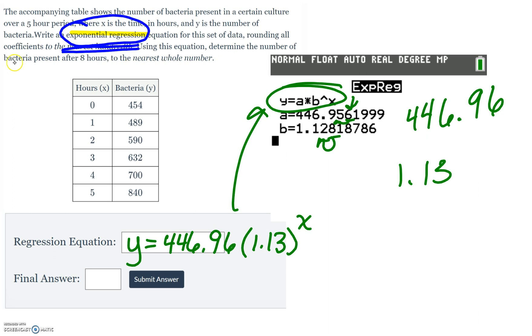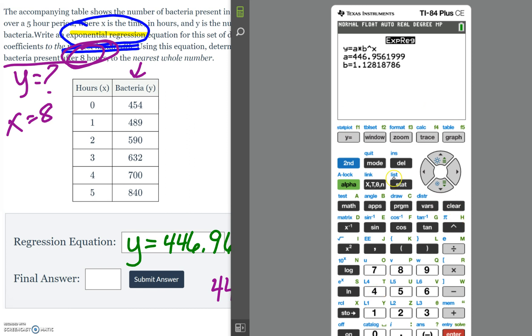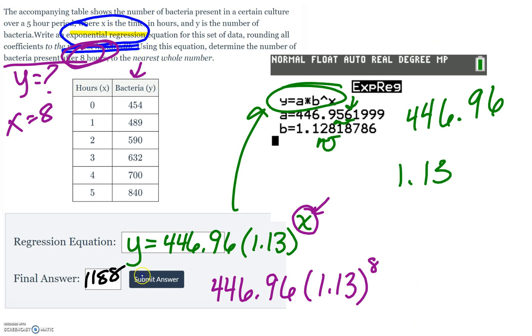And then the last part says determine the number of bacteria. So we're looking for y because bacteria is y after 8 hours. So we know that x equals 8. So every time we see an x, like right here, we're going to plug in an 8. So 446.96 times 1.13 to the 8th power. We're going to type that right into our calculator in the home screen. So 446.96 times 1.13 to the 8th power. Hit enter, and it says to the nearest whole number. So it's going to be 1,188. And again, we would hit submit.